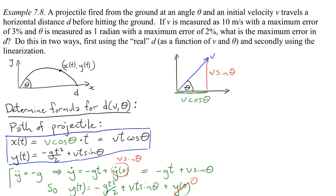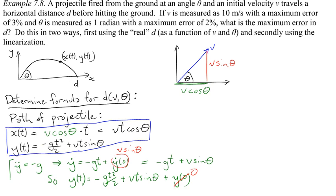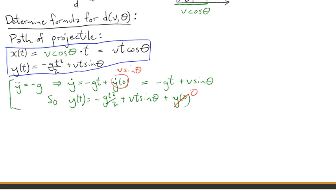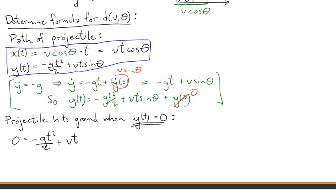So there's x of t, y of t, the path of the projectile. Now what we want to do is determine when the projectile hits the ground. And it hits the ground, of course, when y of t is zero. So let's set y of t equal to zero and solve for t. We find either t equals zero or t equals two v sine theta over g. And that latter one is, of course, the one we're interested in.